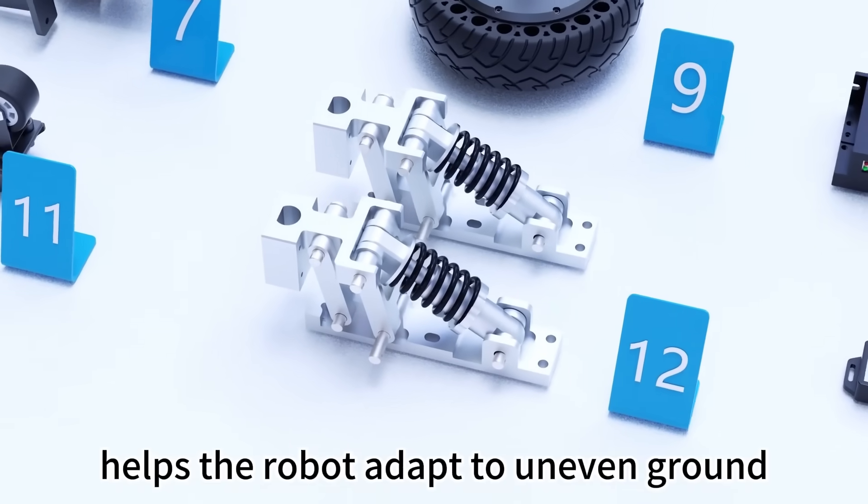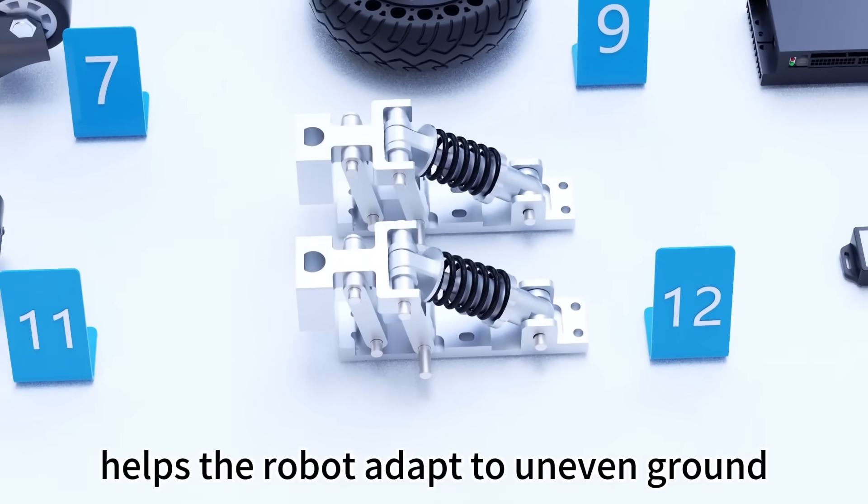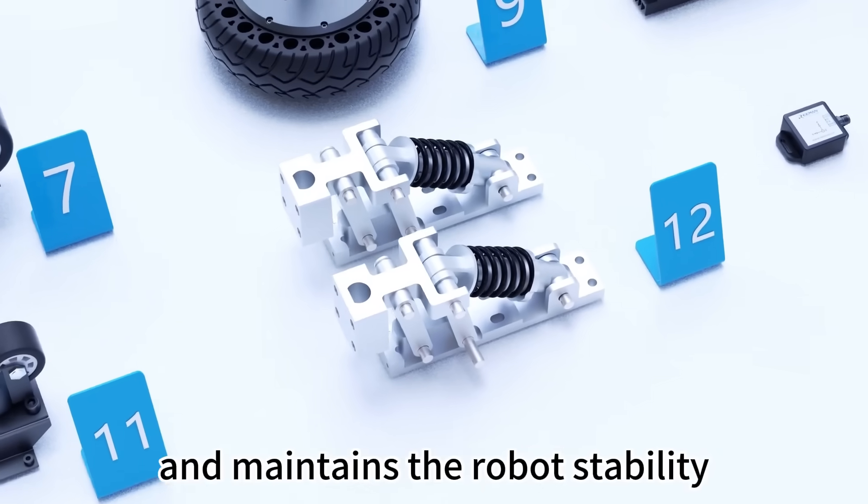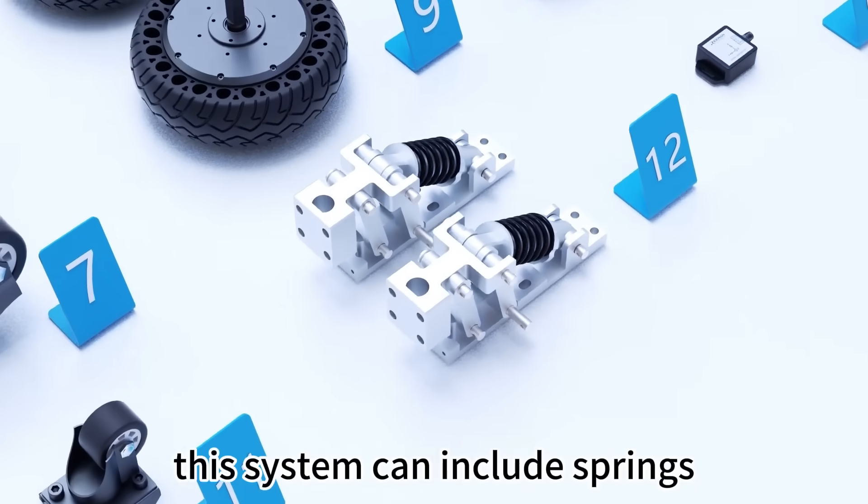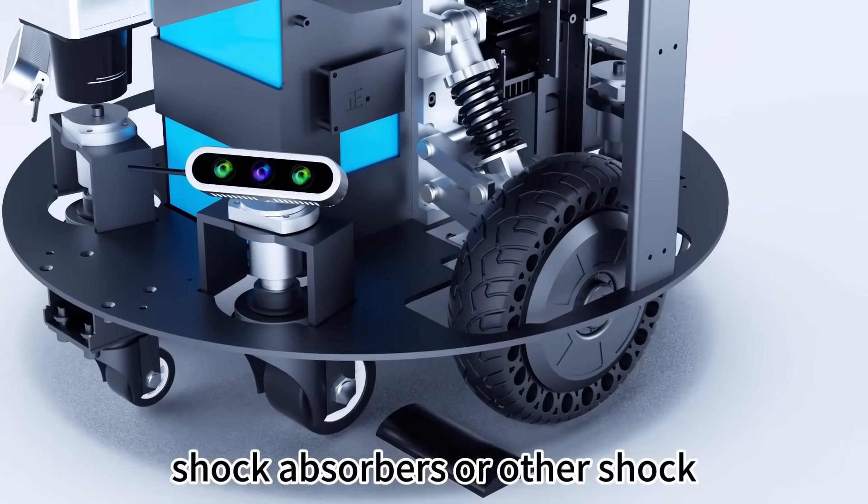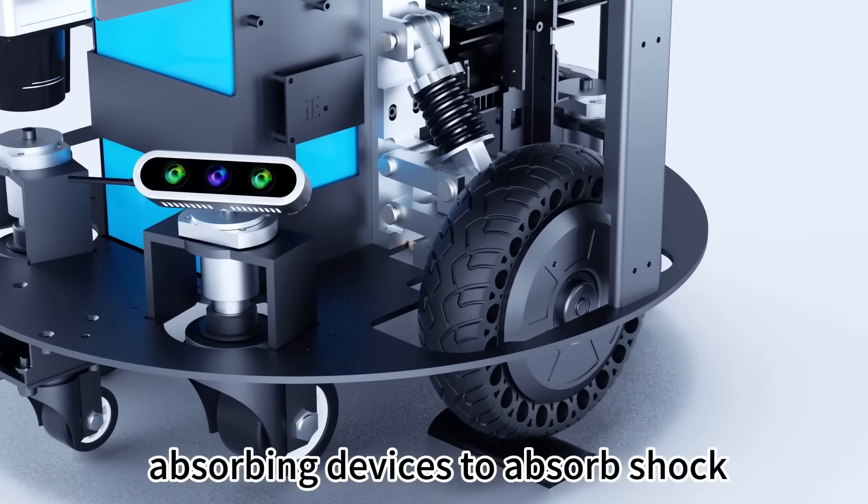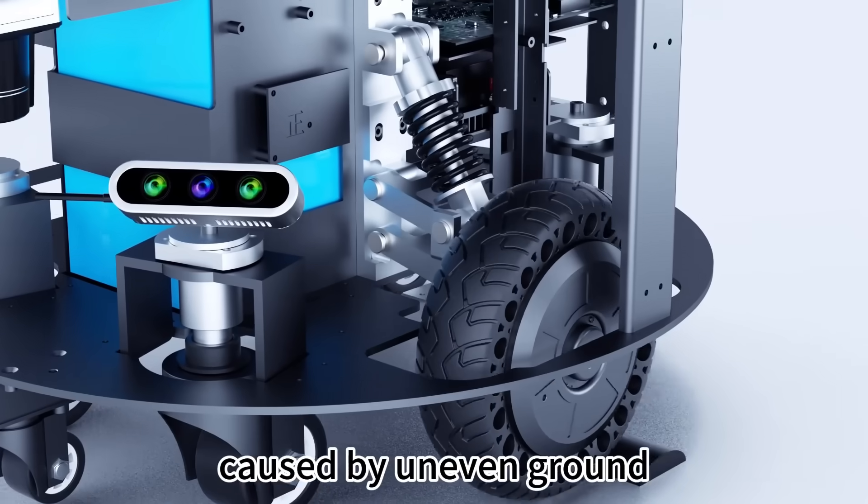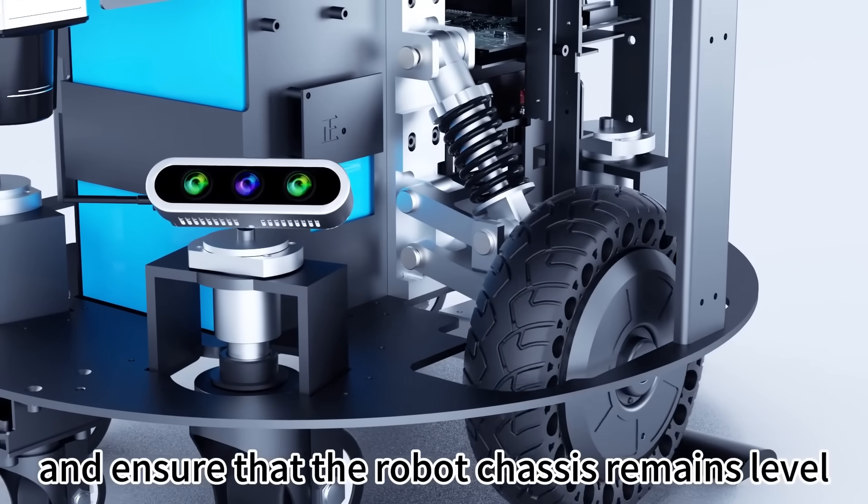The suspension system helps the robot adapt to uneven ground, reduces vibration, and maintains the robot's stability. This system can include springs, shock absorbers, or other shock-absorbing devices to absorb shock caused by uneven ground and ensure that the robot chassis remains level.